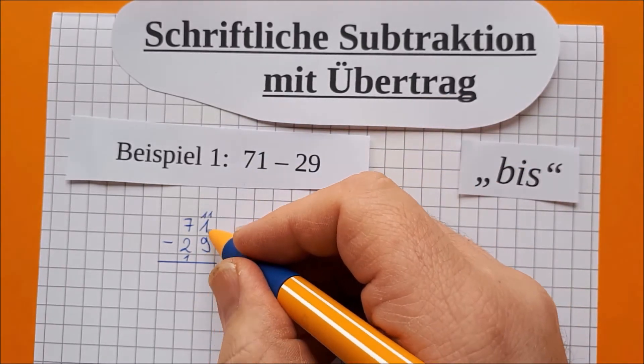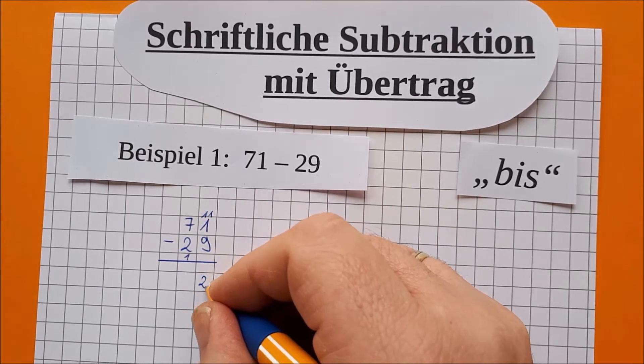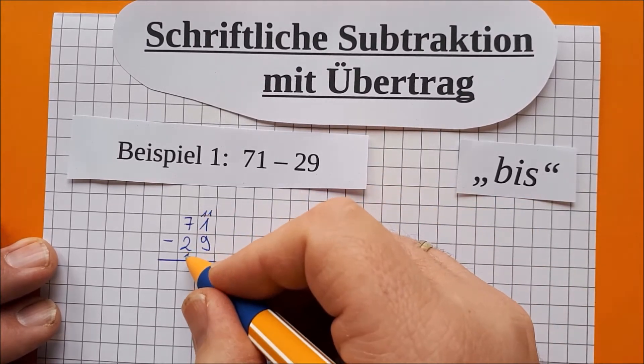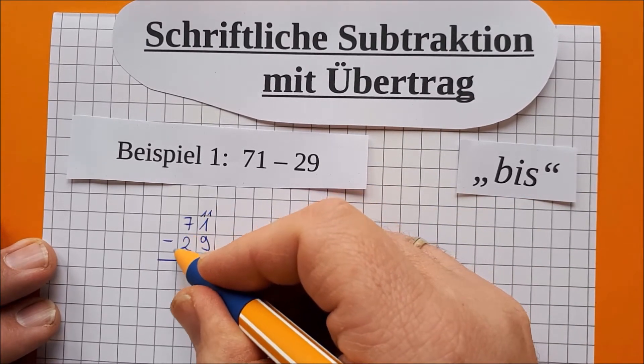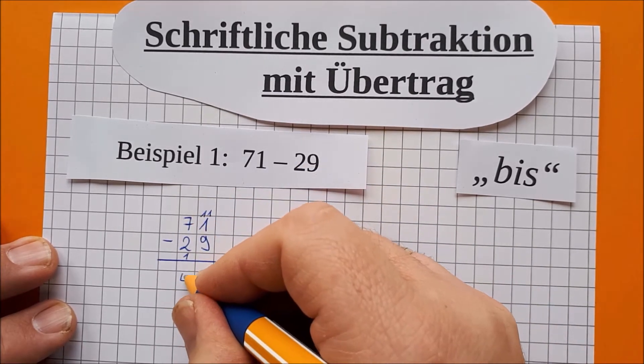Jetzt rechnen wir nicht 9 bis 1, sondern 9 bis 11. 9 bis 11 sind bekanntlich 2. Da beißt die Maus keinen Faden ab und Anton auch nicht. Diese 1 gehört jetzt hier zu der unteren Zahl. Das sind also 3. 3 bis 7 ist das Gleiche wie 4.